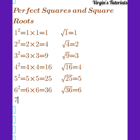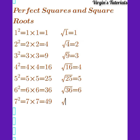Now, we go to 7 — 7 raised to the power 2. 7 raised to the power 2 is simply 7 times 7, which is equal to 49. When we have the square root of 49, it's simply equal to 7.